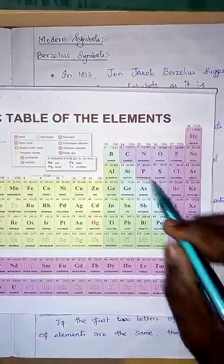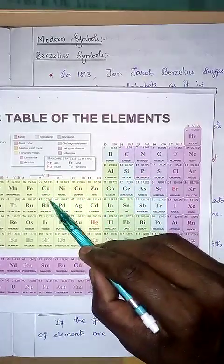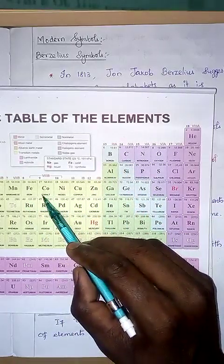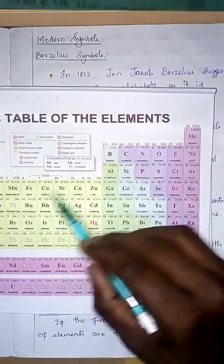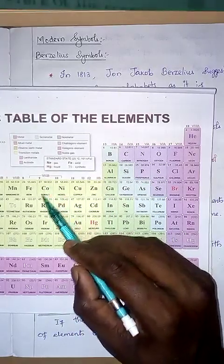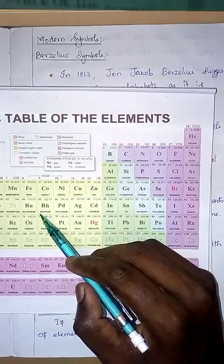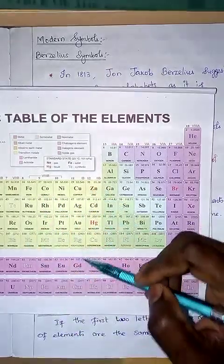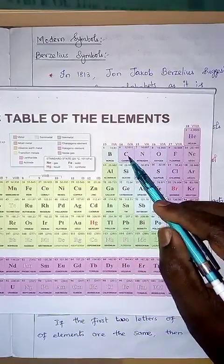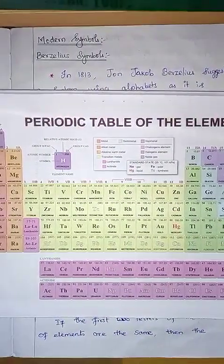Let us see some examples on the modern periodic table. Carbon starts with C and cobalt also starts with C. So when two elements share the same first letter, the second letter is chosen as part of the symbol. I hope you have understood this point.